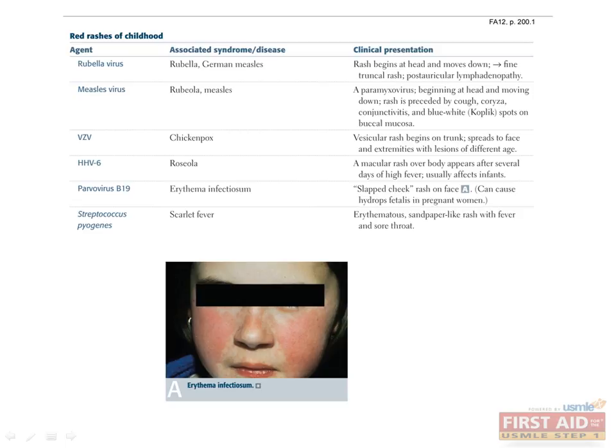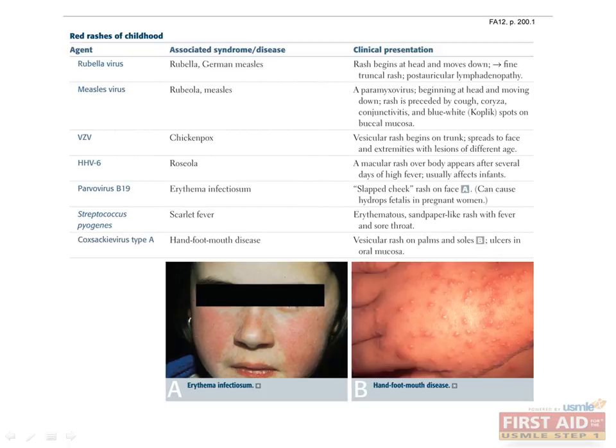Strep pyogenes causes scarlet fever, which is an erythematous, sandpaper-like rash with fever and sore throat. Lastly, Coxsackievirus type A causes hand, foot, and mouth disease, which is a vesicular rash on the palms and soles. It also can cause ulcers in the oral mucosa.